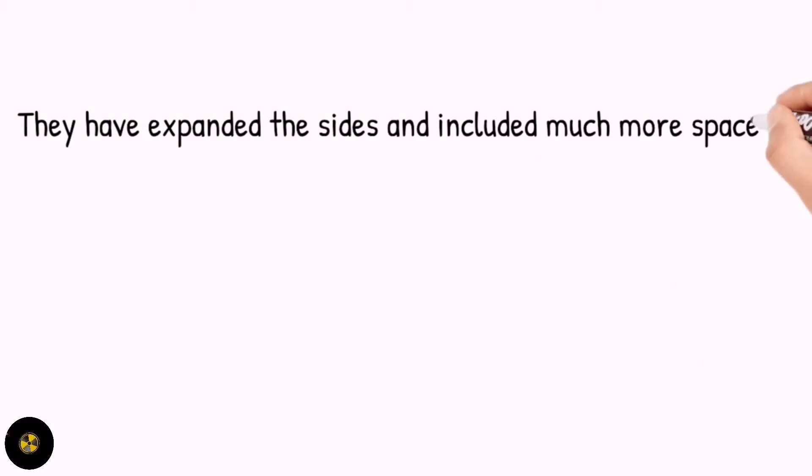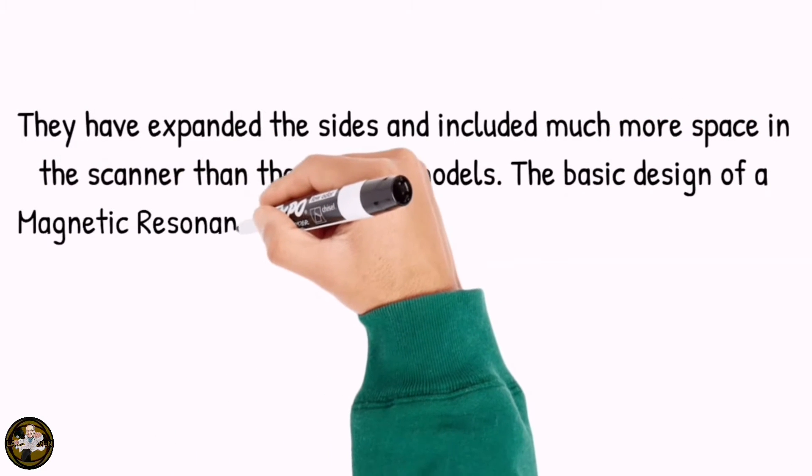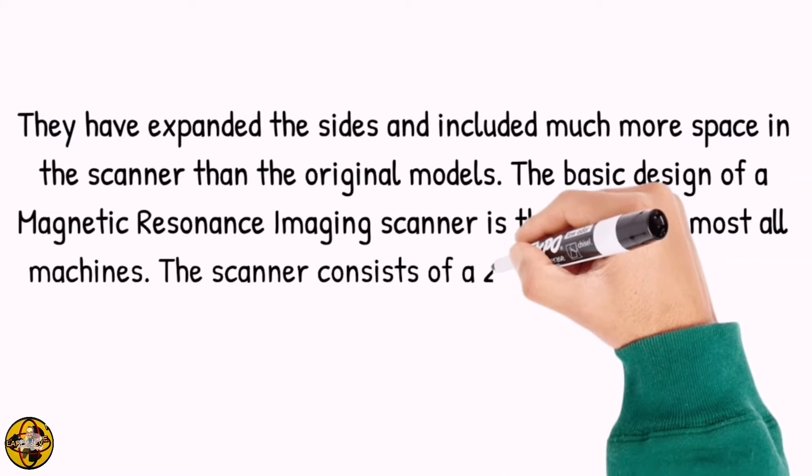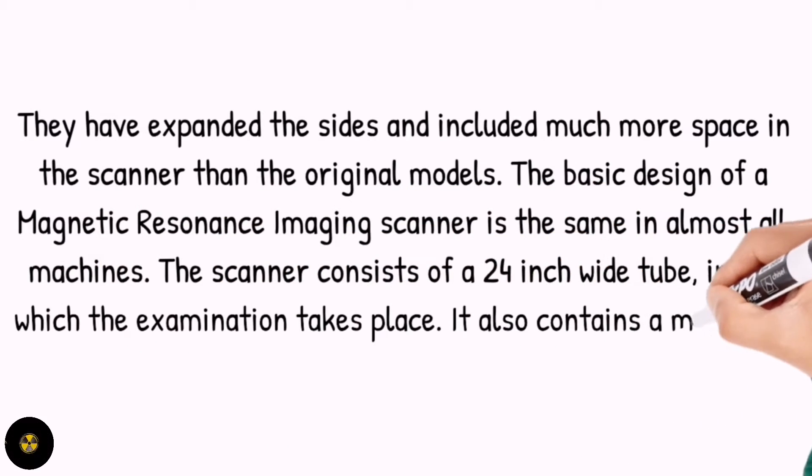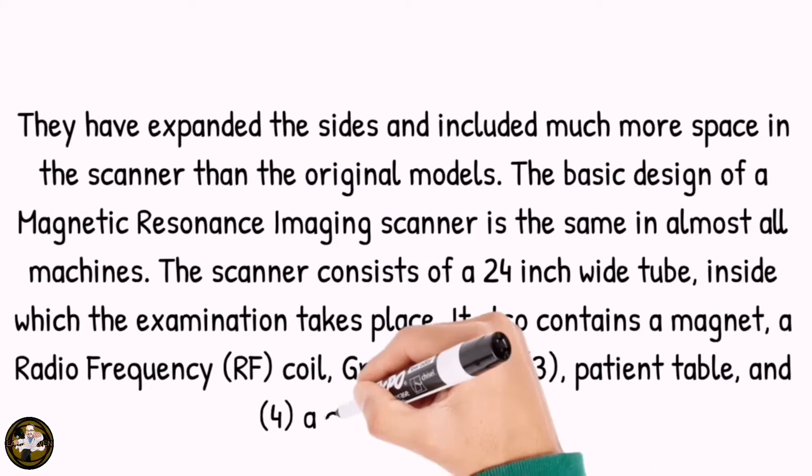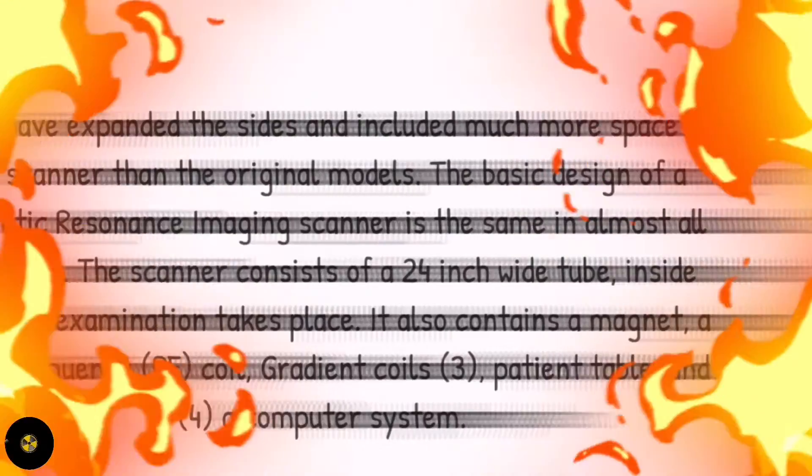They have expanded the sides and included much more space in the scanner than the original models. The basic design of a magnetic resonance imaging scanner is the same in almost all machines. The scanner consists of a 24-inch wide tube where the examination takes place. It also contains a magnet, a radio frequency coil, gradient coils, patient table, and computer system.